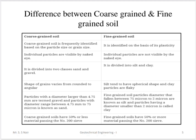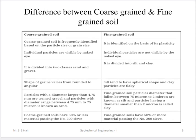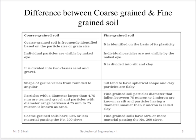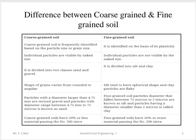The shape of gravel varies from round to angular, silt tends to be spherical, and clay may be flaky in shape. Particle size larger than 4.75 mm is termed gravel, and 4.75 mm to 75 microns is sand. In fine-grained soil, 75 microns to 2 microns is silt, and less than 2 microns is clay. Coarse-grained soil has 50% or less material passing through the No. 200 sieve; fine-grained soil has 50% or more.